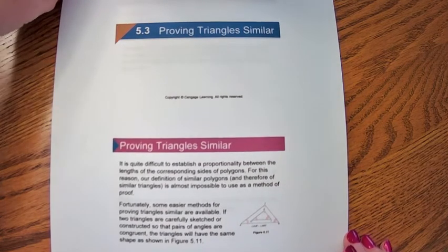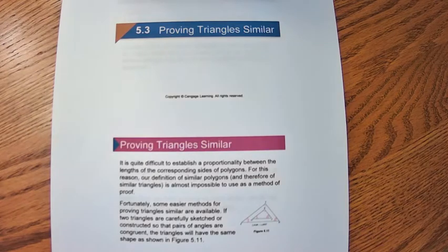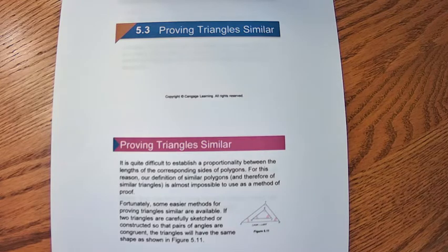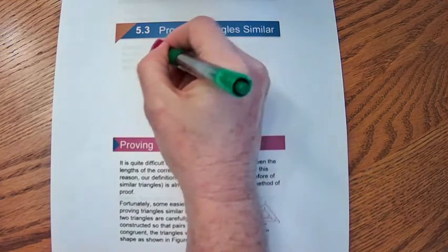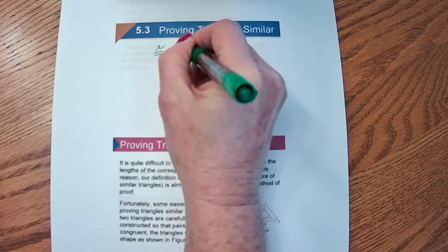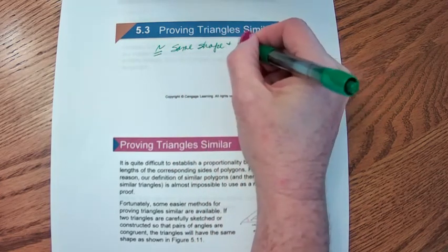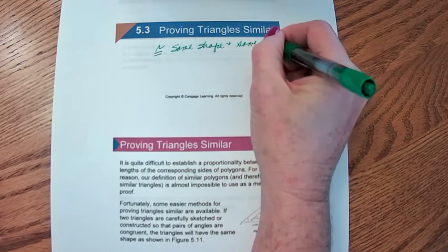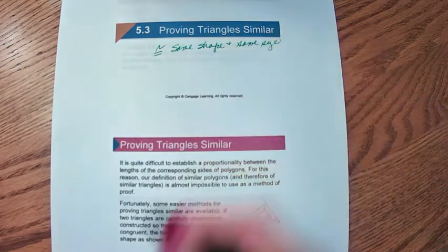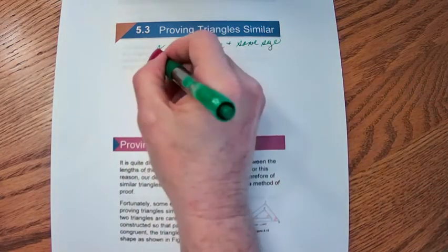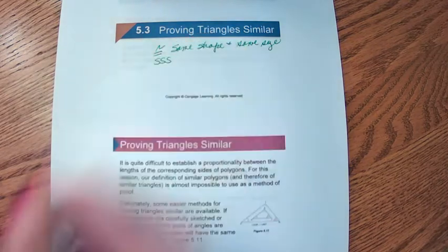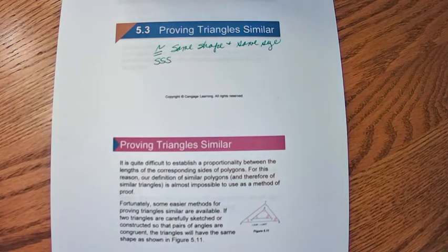In section 5-3, we're going to prove that we have some similar triangles. But before we do that, let's remember what we have to go through to prove that triangles are congruent. Congruent means the triangles have the same shape and the exact same size. Our reasons include side-side-side, where all three sides are congruent.